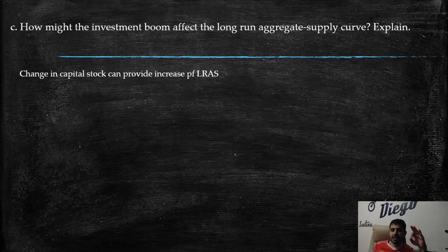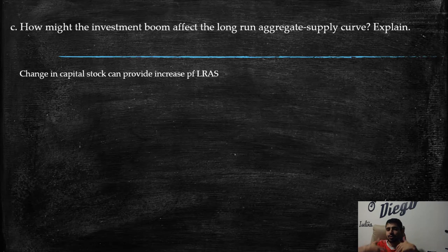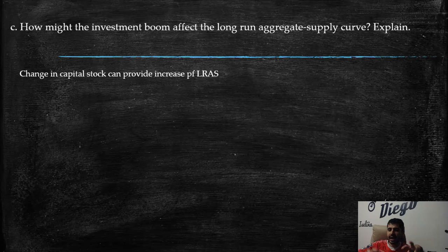Part c: How does the investment boom affect the long-run aggregate supply curve? A change in capital stock can increase long-run aggregate supply. Investment increases the capital stock, providing an impulse to push long-run aggregate supply to the right. This allows the economy to produce even higher output in the long run.